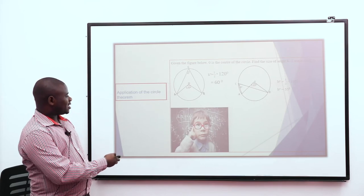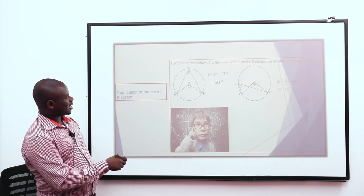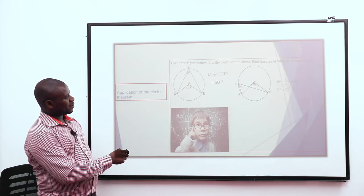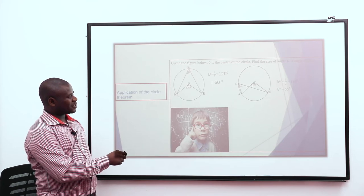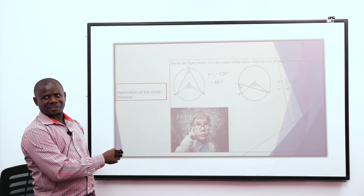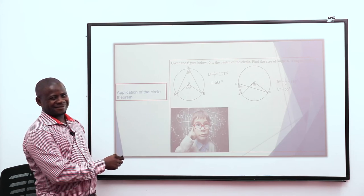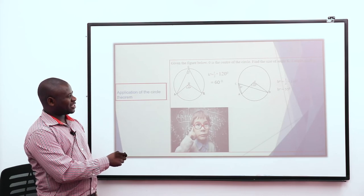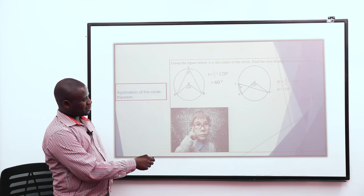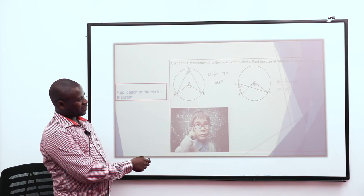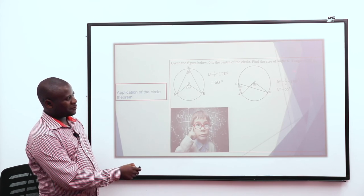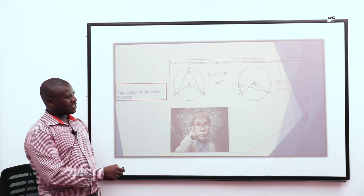Let's look at some simple applications of what we have learned. If you are given an angle at the center of 120 degrees and told to find angle K, from our theorem the angle subtended by an arc at the center is twice the angle at the circumference. So K is half of 120 degrees, which gives us 60 degrees. The same applies to the next example: the arc subtends an angle to the circumference and an angle of 110 degrees to the center. Since B is at the circumference, B equals half of 110, which is 55 degrees.